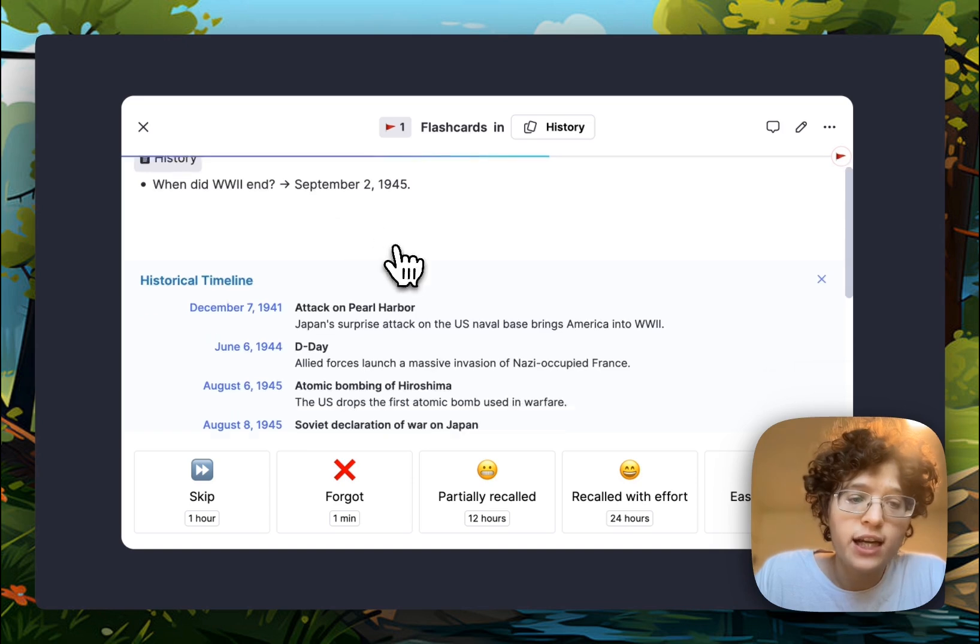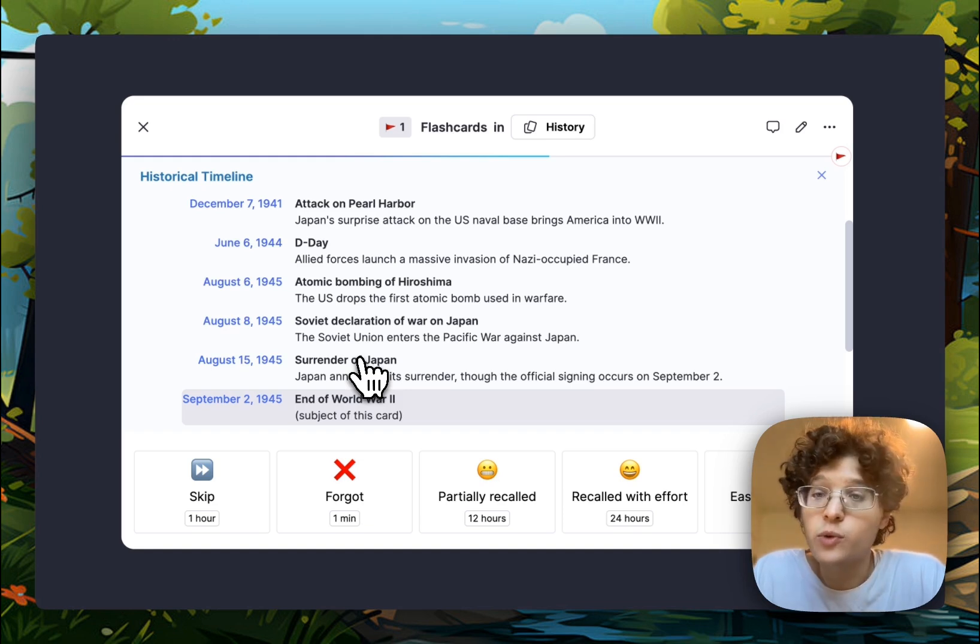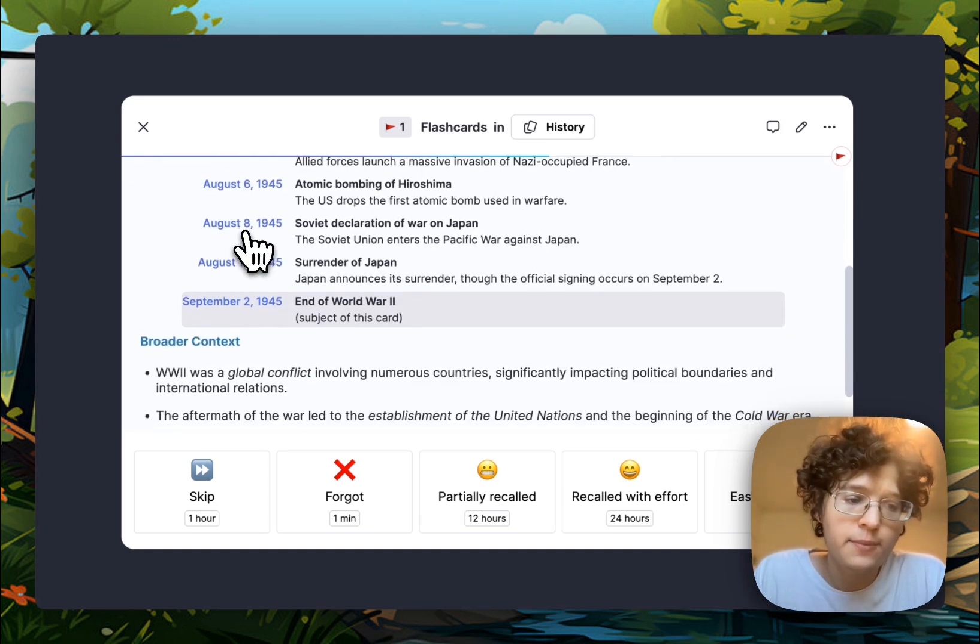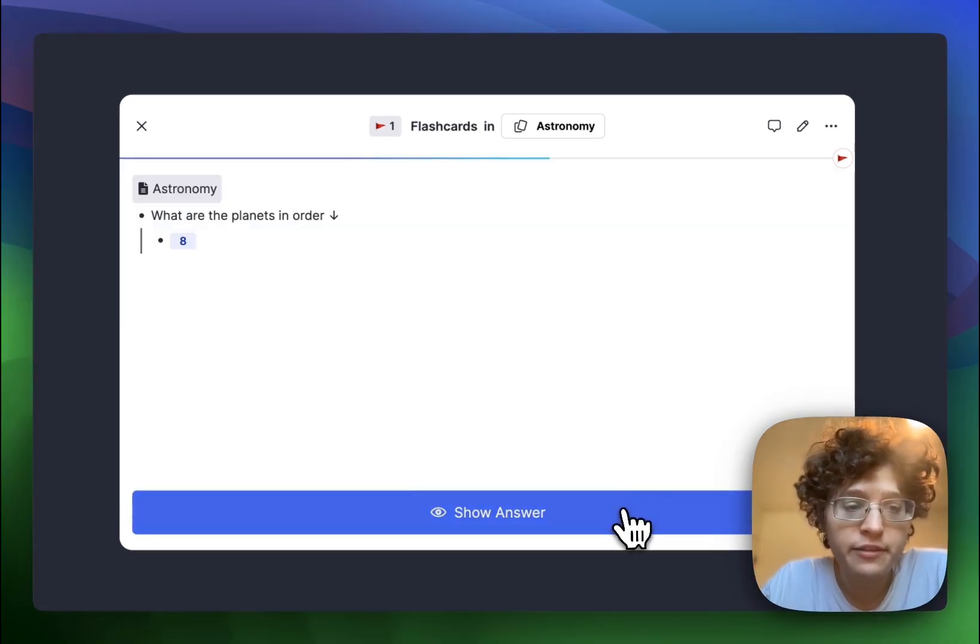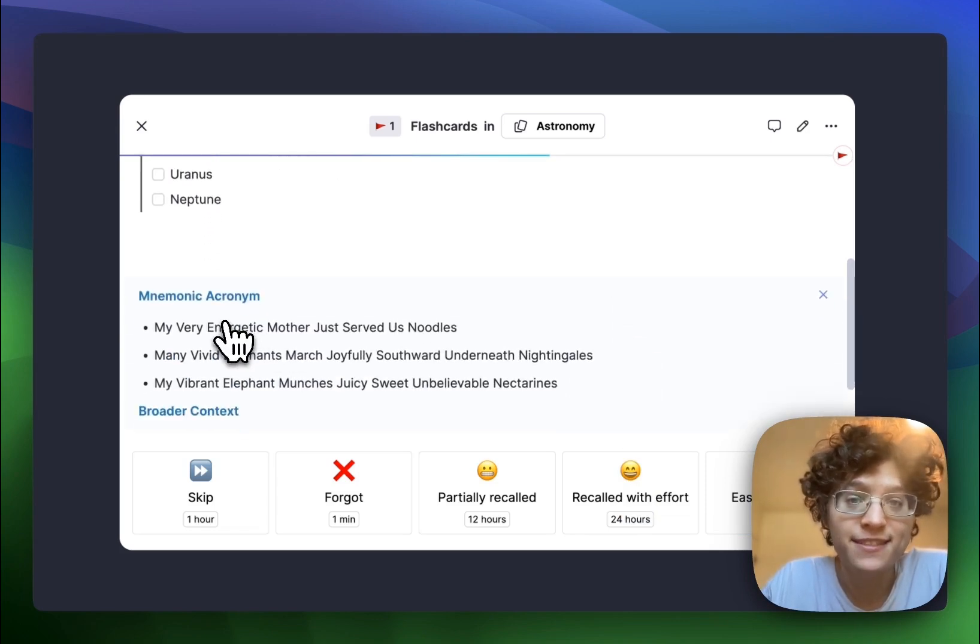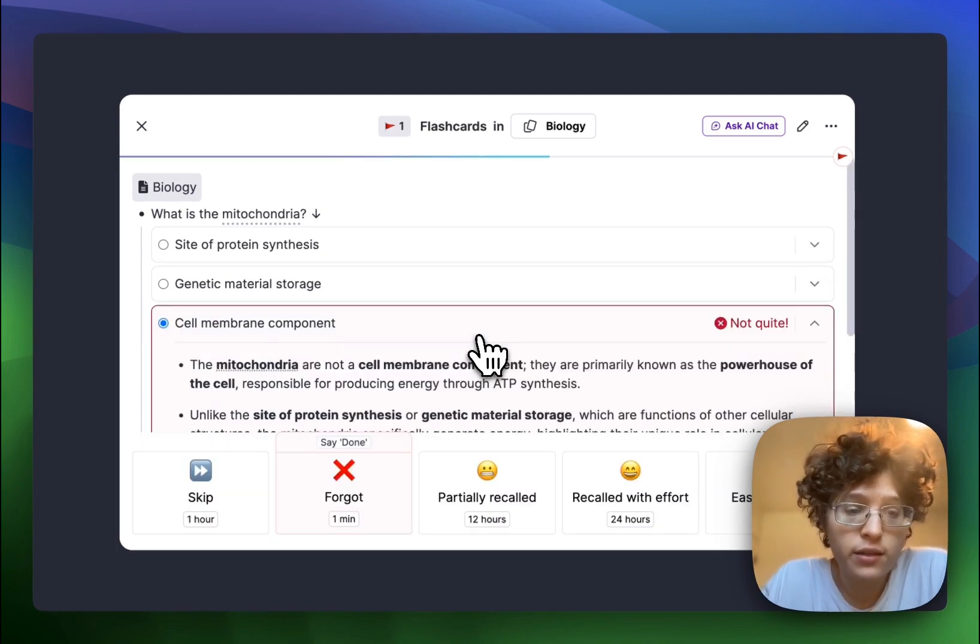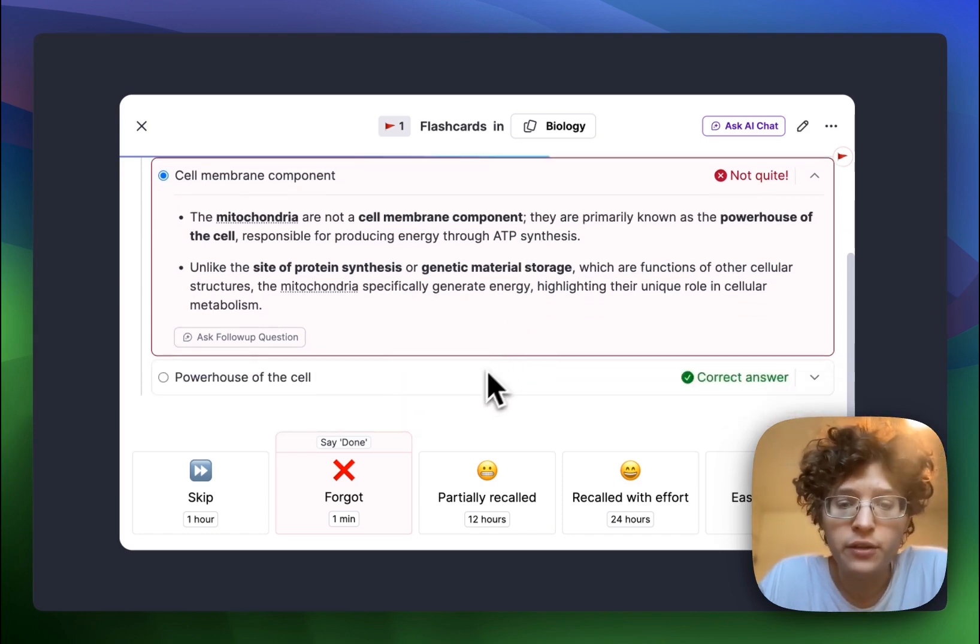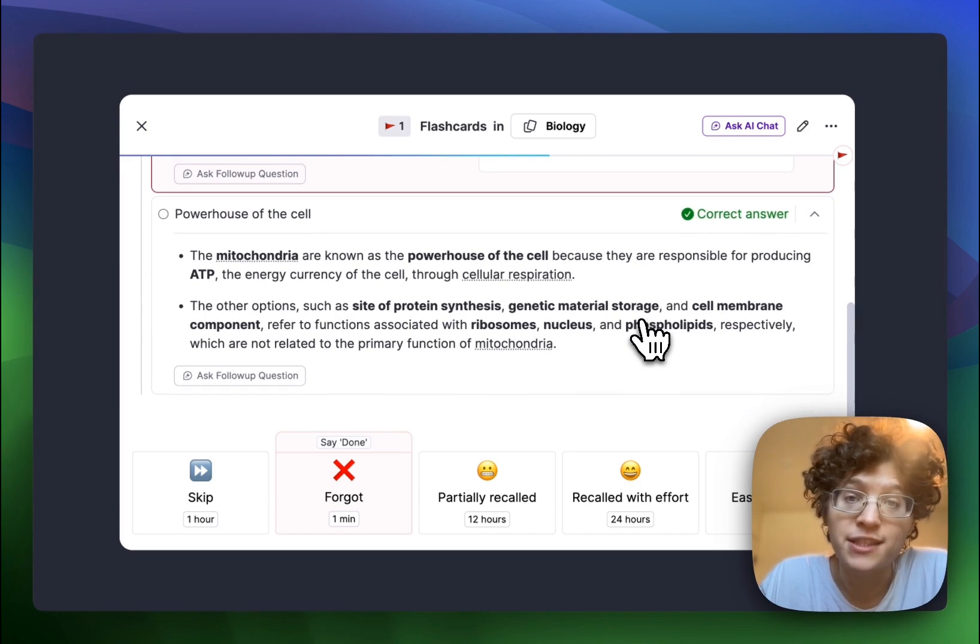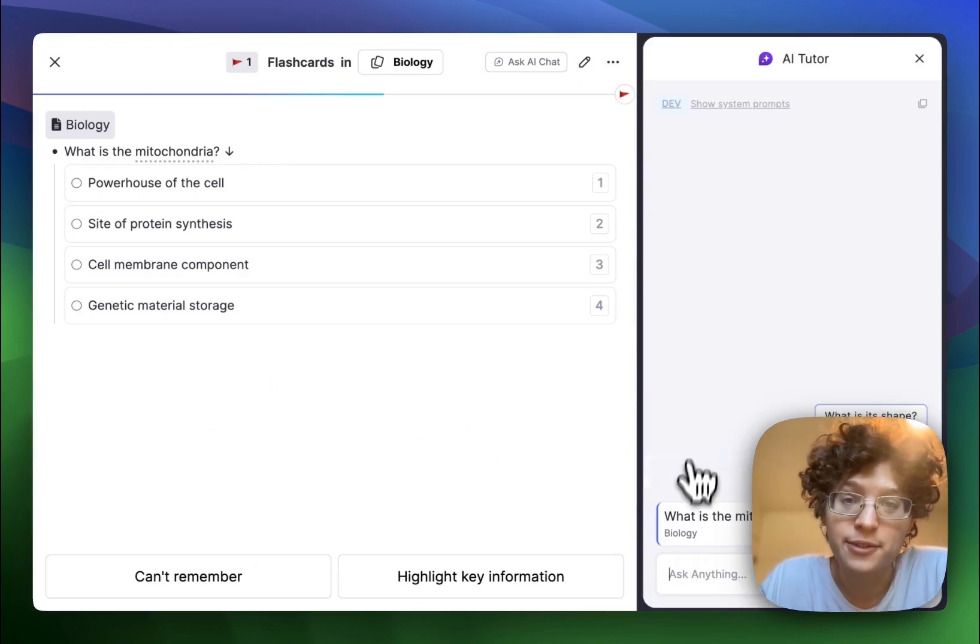There are a few different kinds of flashcard insights. For dates, we've added an automatic timeline that shows you the surrounding context of events before and after the one that's on your card. Insights are automatically selected based on what's most useful. So for dates, you'll see the historical timeline and then in this case, some broader context about World War II. If you have a list, we'll show you a mnemonic acronym to help you remember the list more easily. For multiple choice cards, we'll automatically show the flashcard insights on the back of the corresponding answer that you choose. If you get it wrong, we'll explain why and tell you what the right answer is. And if you get it right, we'll drill down into the right answer in even more detail. Again, if you're confused, you can ask a follow up question right with this button here, and we'll automatically have context for the card that you're talking about.